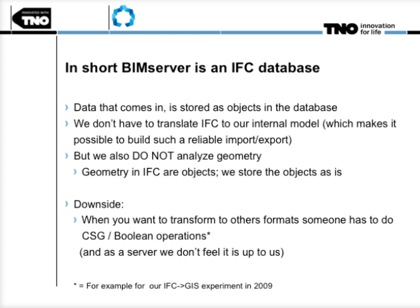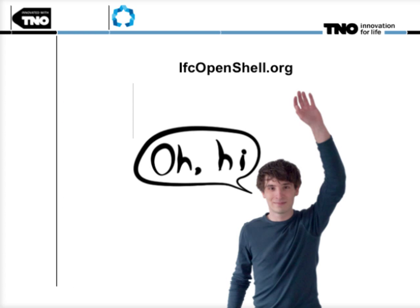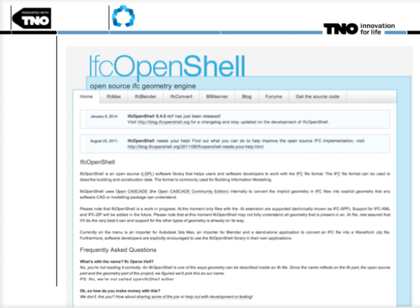That was always a limitation in the first versions: the downside was that when you want to transform IFC to different formats like CityGML or Collada, you had to do some boolean operations, and as a server we didn't feel it was our task to implement that. So somewhere back in 2009, Thomas Kreinen came up and said, let's make an open source geometry renderer. He built IFC Open Shell, which is built on Open Cascade. In short, it parses IFC through Open Cascade to do boolean operations, tessellations, and all that kind of stuff.